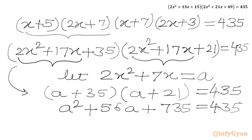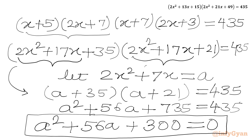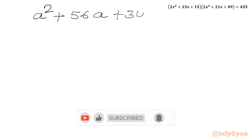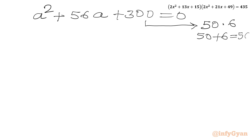Now we will take all the terms to LHS to get one quadratic equation. We get: a² + 56a + 735 − 435 = 0, which simplifies to a² + 56a + 300 = 0. Now we have to solve this quadratic equation. We can factor 300 as 50 times 6, and 50 plus 6 gives us middle term coefficient 56. So our split is clear.